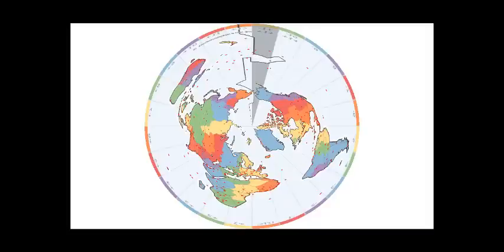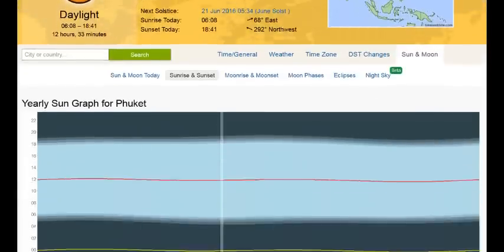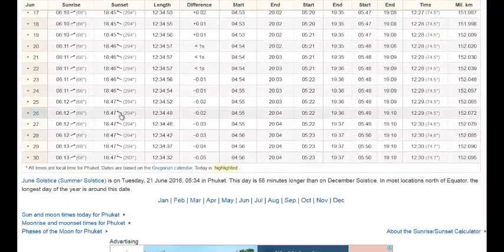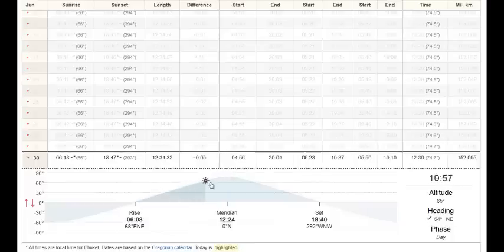So we're going to have a look at timeanddate.com and see how the days in different places show different times for what should be midday — when the sun is either directly overhead or at its zenith, its highest point in the day. Let's first have a look at Phuket, Thailand in May. We'll see that there is no problem with the angles and the times of the sun rising and setting. This does reflect how we actually see it based on perspective, but you can see here that it's 12:24 at the meridian when the sun is at its highest point. So it's already out of whack with us not being quite on the equator.